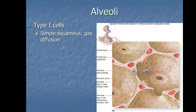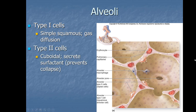Alveolar sacs are made up of simple squamous epithelium — very thin to allow oxygen and carbon dioxide to diffuse across. These simple squamous epithelial cells are called type 1 cells. Type 2 cells are cuboidal-shaped and secrete a substance called surfactant. Surfactant prevents the alveoli from collapsing by reducing surface tension, so type 2 cells are essential for maintaining open alveoli.